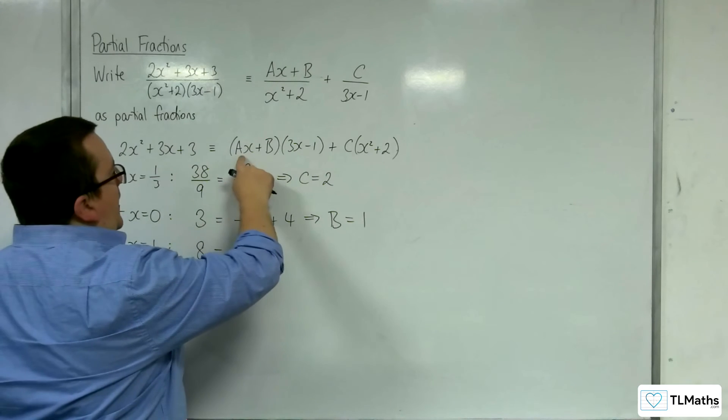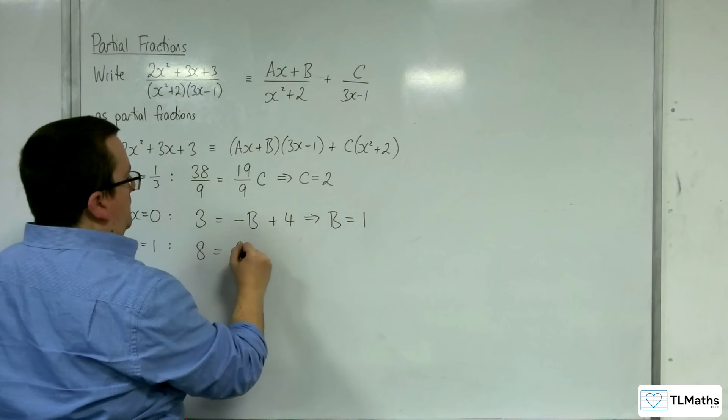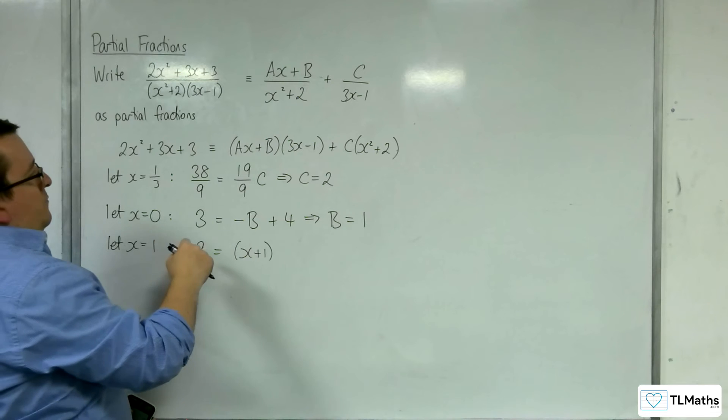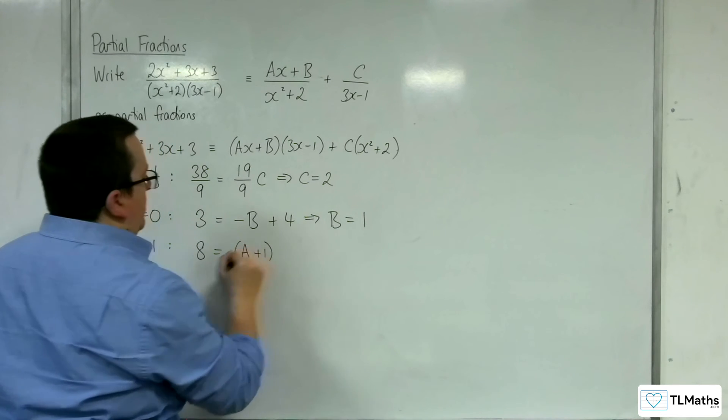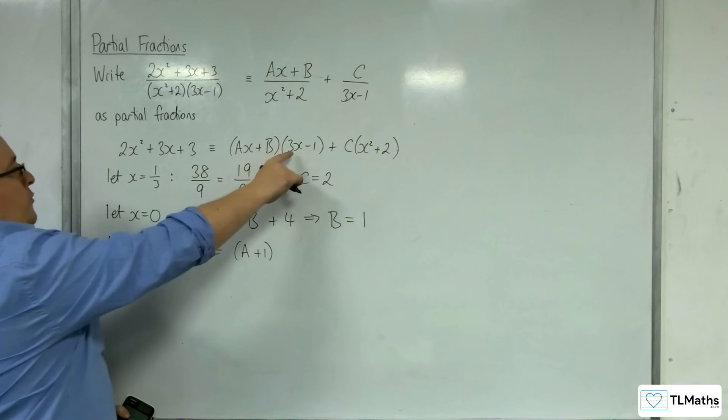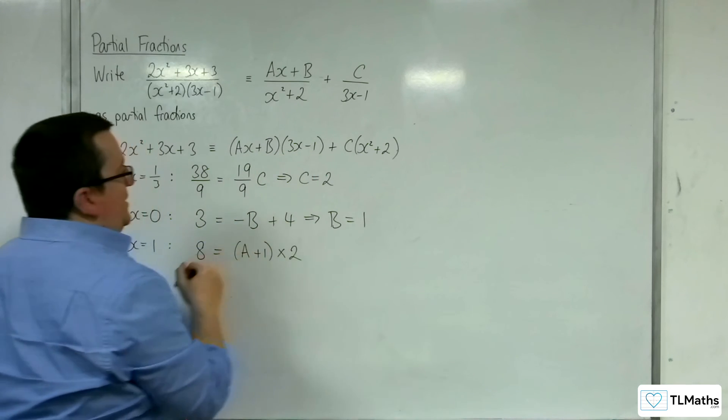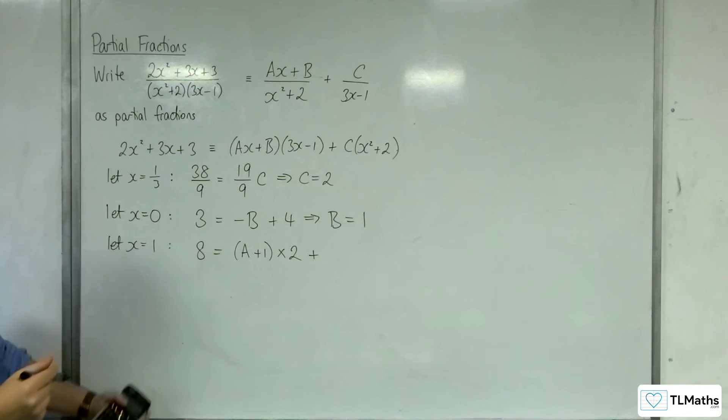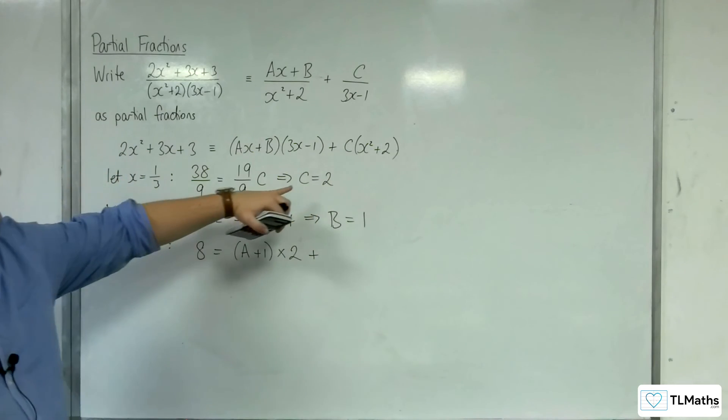On the right-hand side, we're going to have a times 1 plus b. So that's just going to be a plus 1. And then we've got 3 times 1, take away 1, so that's times by 2, plus 1 squared plus 2 is 3. 3 lots of 2 is 6.